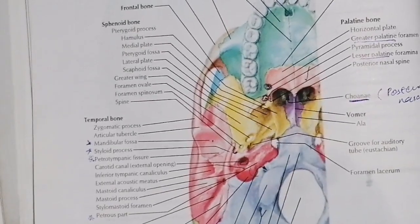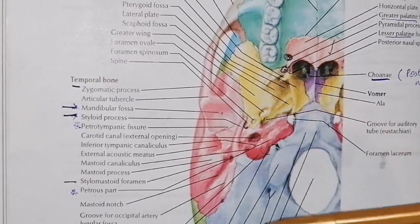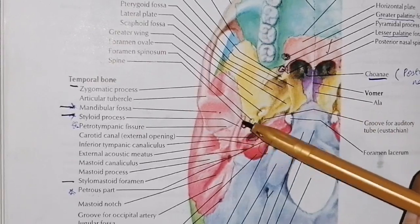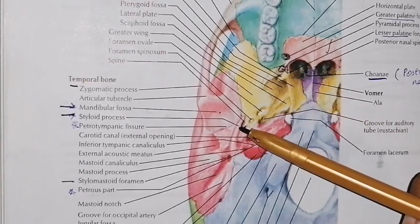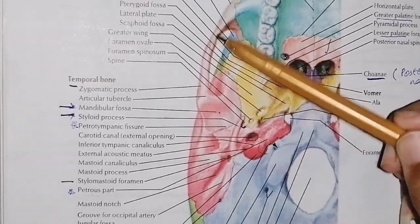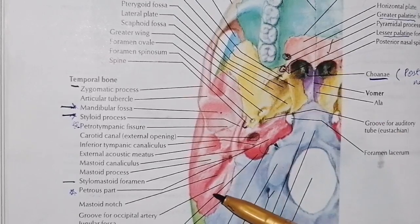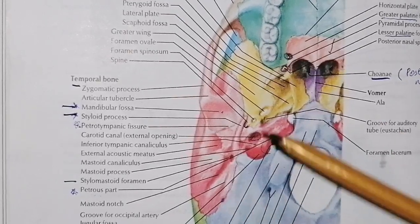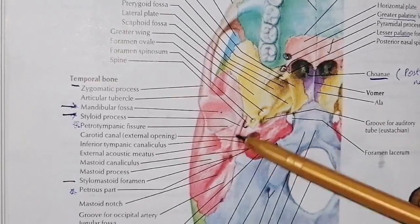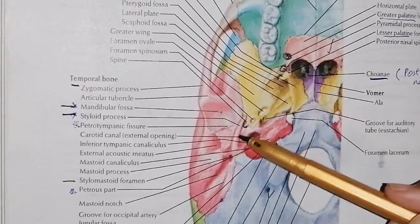Now we have the temporal bone. The temporal bone has three processes to learn. First, we have the styloid process. Second is the zygomatic process, which forms the zygomatic arch. The styloid process projects forward and downward.